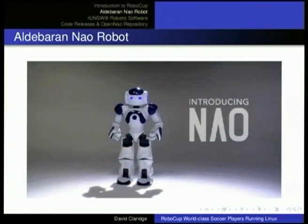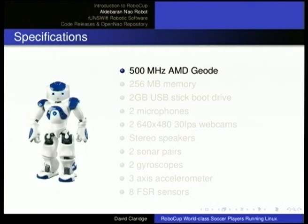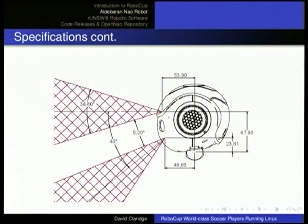The NAO robot is produced by a French company called Aldebaran based in Paris. Its basic specifications include a 500 MHz Geode processor, 256 MB of onboard RAM, a 2 GB USB stick it boots from and where software is stored, a couple of microphones, webcams, speakers, sonars, two gyroscopes, a three-axis accelerometer, and eight pressure sensors — four in each foot. The layout of the hardware inside the robot is a little unusual. The cameras are located in the forehead and chin, not the eye sockets — that's where the infrared sensors go.